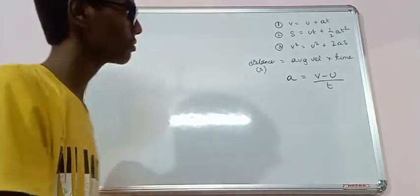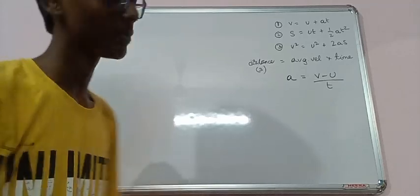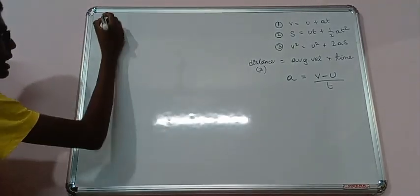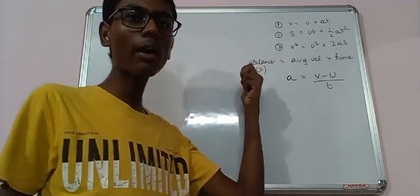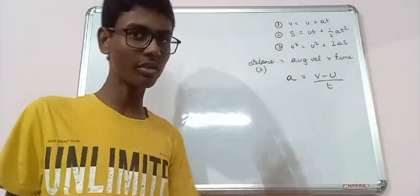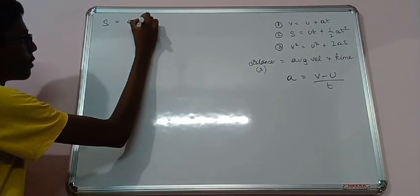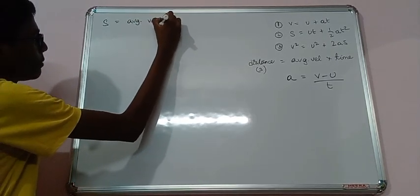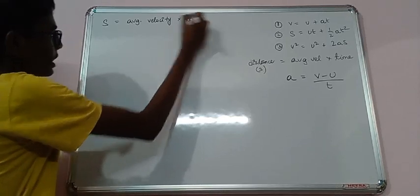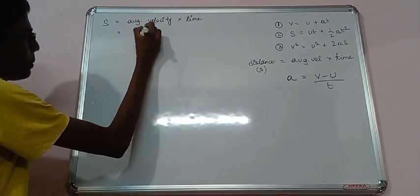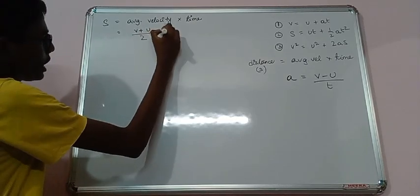V squared equals to U squared plus 2AS. Again applying the same thing. Distance S equals to average velocity into time. What is an average velocity? Again V plus U by 2, sorry not T, it's 2, into time.